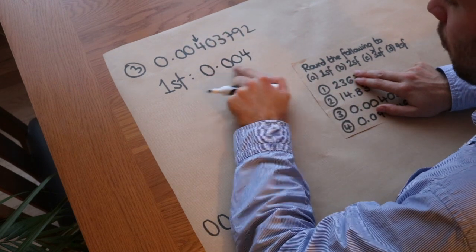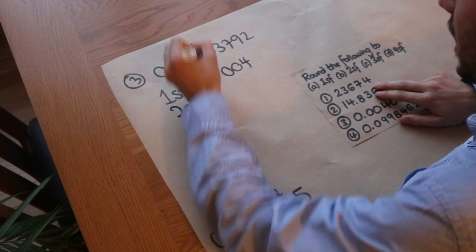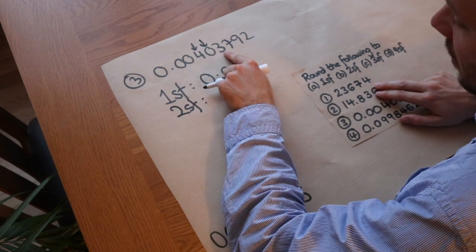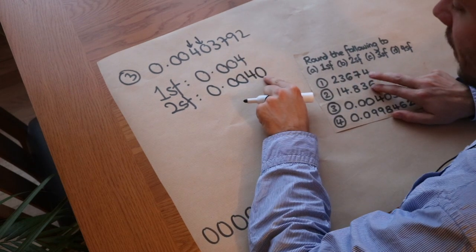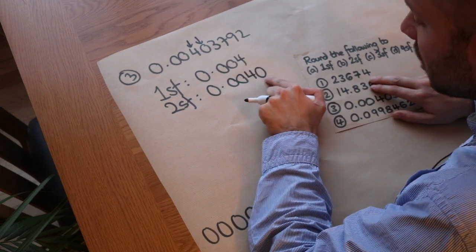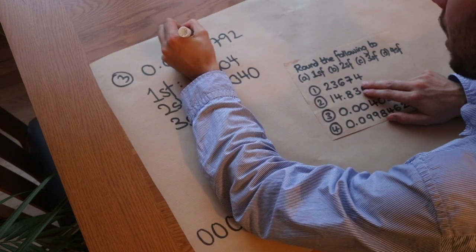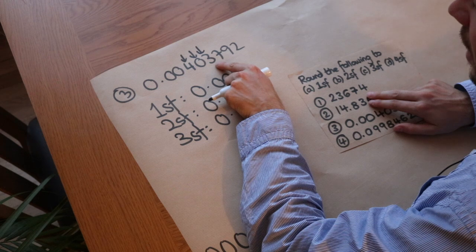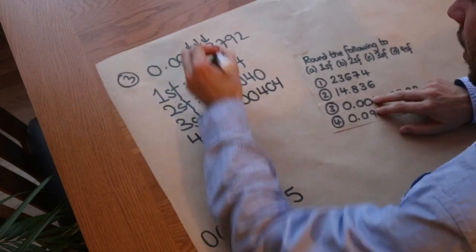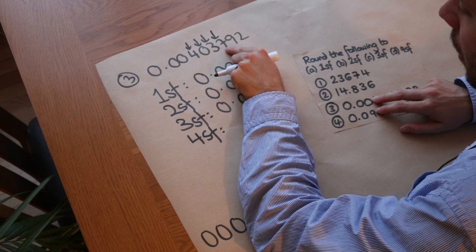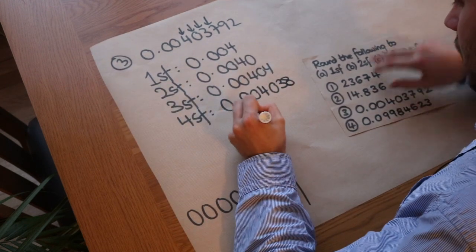We need the leading zeros because without them that 4 would become a units digit instead of the thousandths digit. For two significant figures, we check up to the next digit — is it greater than or equal to five? No it isn't, so the zero stays as zero, giving 0.0040. You absolutely need that trailing zero because you're keeping two digits starting from the 4. For three significant figures, we check the next digit — yes, greater than or equal to five — so the 3 goes up to 4, giving 0.00404. For four significant figures, that digit is greater than or equal to five so the 7 goes up to 8, giving 0.004038.